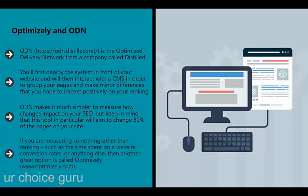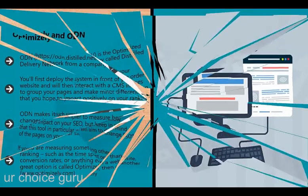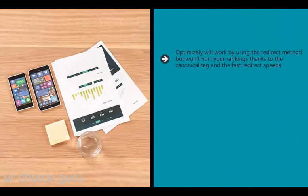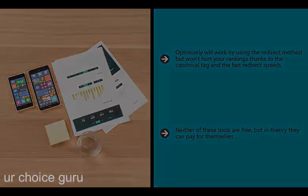If you are measuring something other than ranking - such as time spent on a website, conversion rates, or anything else - another great option is Optimizely (optimizely.com). Optimizely uses the redirect method but won't hurt your rankings thanks to the canonical tag and fast redirect speeds. Neither of these tools is free, but in theory they can pay for themselves. If you're interested in split testing and want to make your life as simple as possible, try them out.